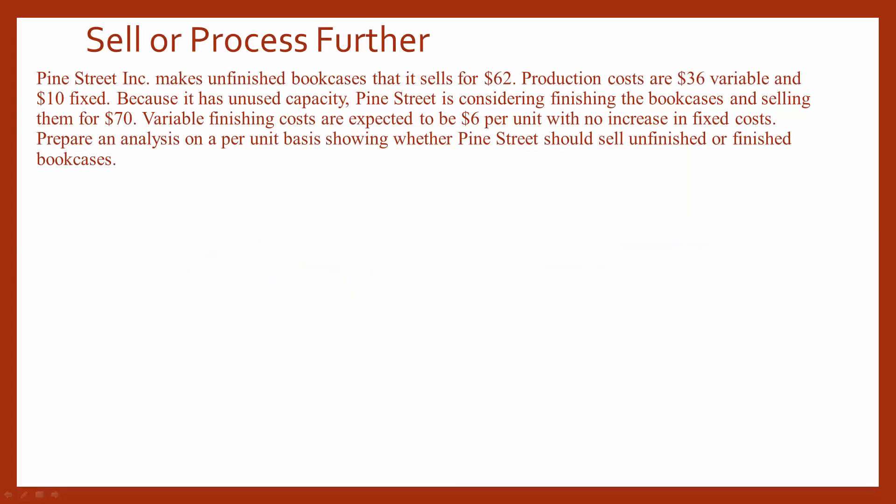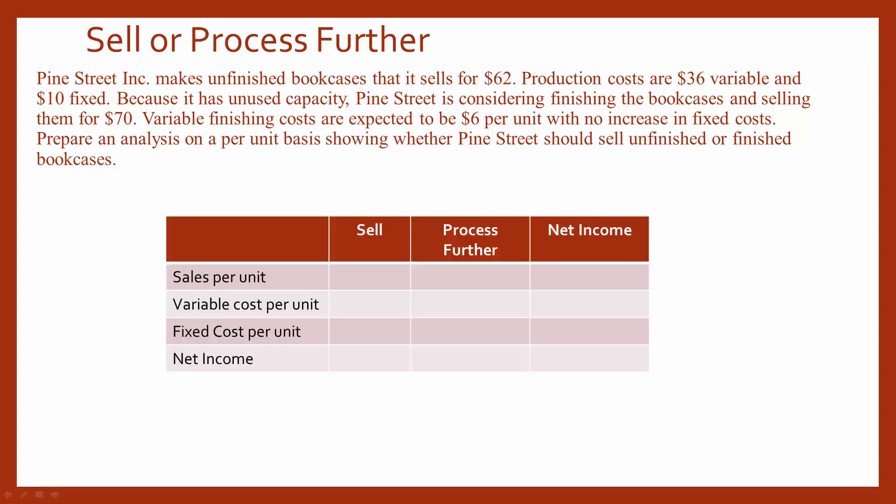Pine Street Inc. makes unfinished bookcases that it sells for $62. Production costs are $36 variable and $10 fixed. Because it has unused capacity, Pine Street is considering finishing the bookcases and selling them for $70. Variable finishing costs are expected to be $6 per unit with no increase in fixed costs. So now we need to prepare a per-unit analysis to decide whether they should sell the bookcases unfinished or go ahead and finish them by processing them further.